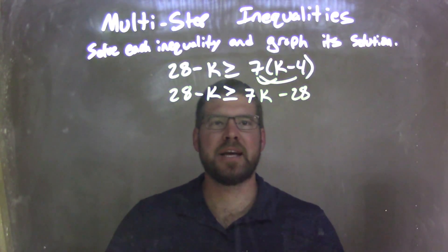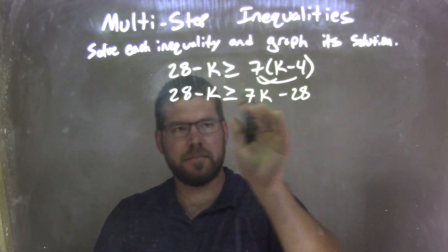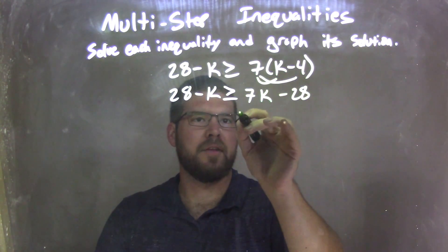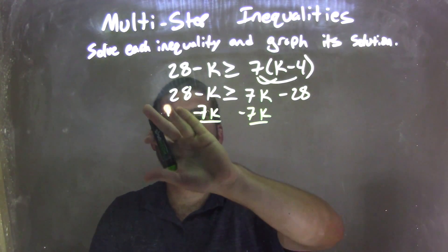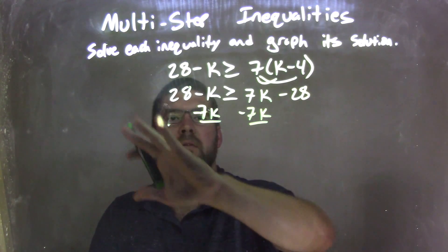Now I'm going to bring my like terms together. So let's bring my k's to the left and my numbers to the right. I'm going to subtract 7k to both sides and subtract 28 to both sides.